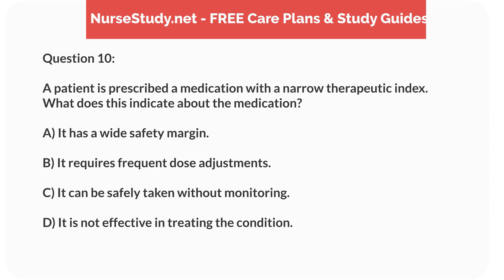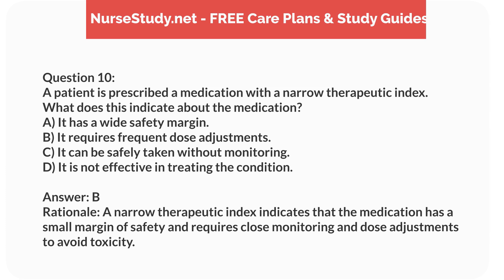Question 10. A patient is prescribed a medication with a narrow therapeutic index. What does this indicate about the medication? A. It has a wide safety margin. B. It requires frequent dose adjustments. C. It can be safely taken without monitoring. D. It is not effective in treating the condition. Answer: B. Rationale: A narrow therapeutic index indicates that the medication has a small margin of safety and requires close monitoring and dose adjustments to avoid toxicity.